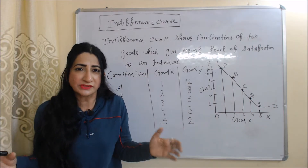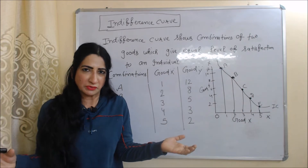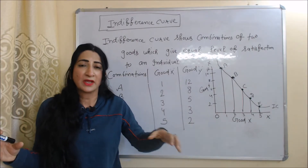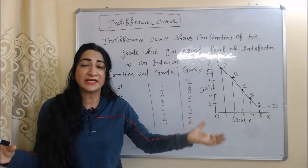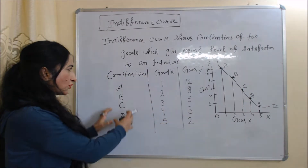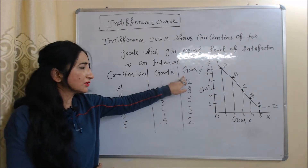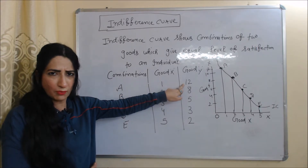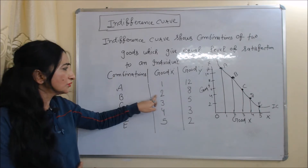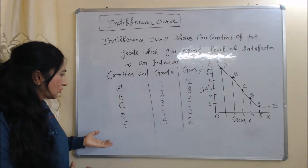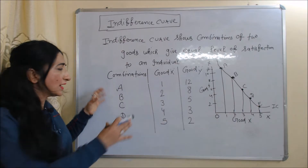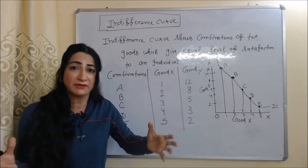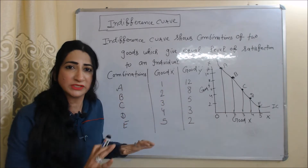An indifference curve shows the combinations of two goods which give equal level of satisfaction to the consumer. In this table, the first column shows combinations, the second column shows good X, and the third column shows good Y. If the consumer buys combination A, they get one unit of good X and 12 units of good Y. Combination B gives two units of X and eight units of Y. Similarly for combinations C, D, and E — whatever combination the consumer buys, they get the same level of satisfaction.